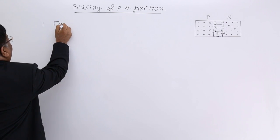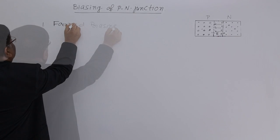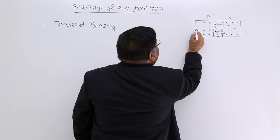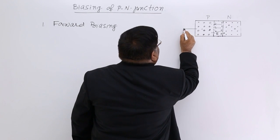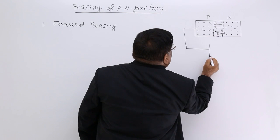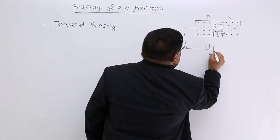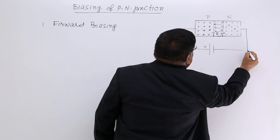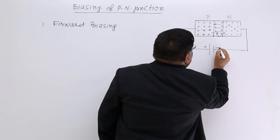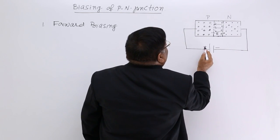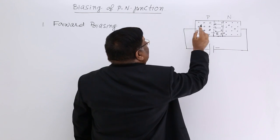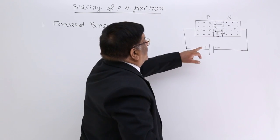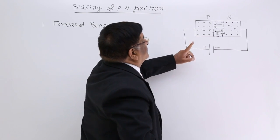First we will study forward biasing. In forward biasing, the P-type is connected with the positive side of the cell and N-type is connected with the negative side of the cell — minus with N and plus with P. Now, what effect does it have when we connect and switch it on?